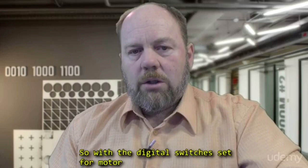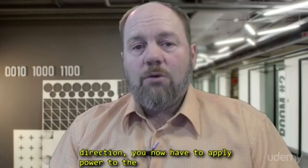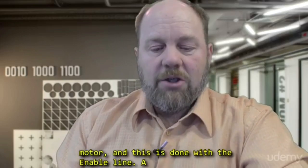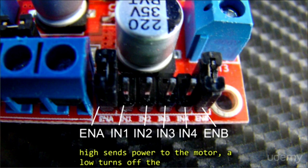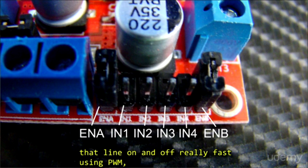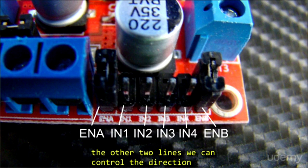So with the digital switches set for motor direction, you now have to apply power to the motor, and this is done with the Enable line. A high sends power to the motor, a low turns off the power. So now if you can picture it, we can turn that line on and off really fast using PWM, controlling the speed of the motor, and then using the other two lines, we can control the direction of the motor.